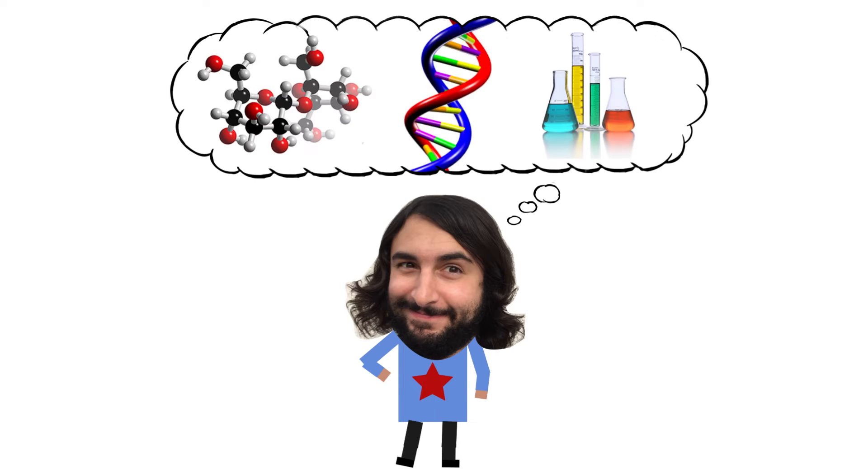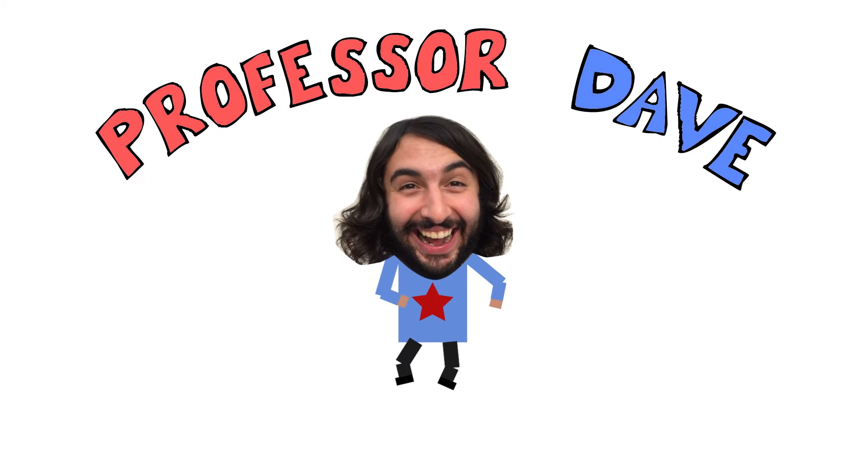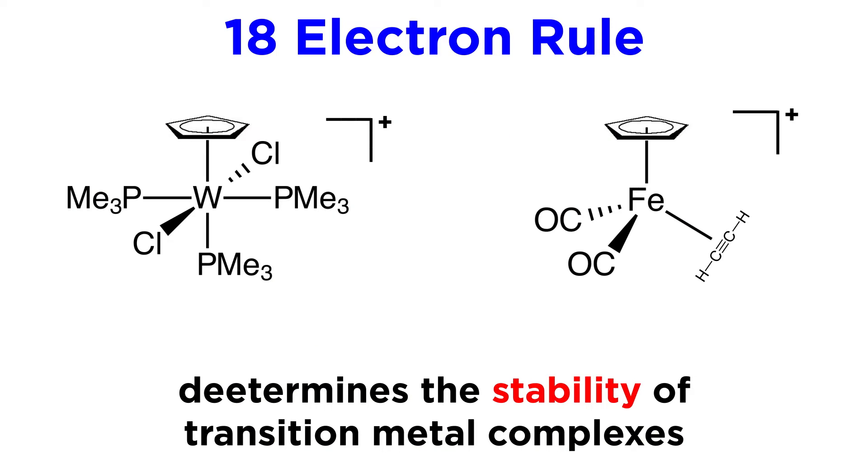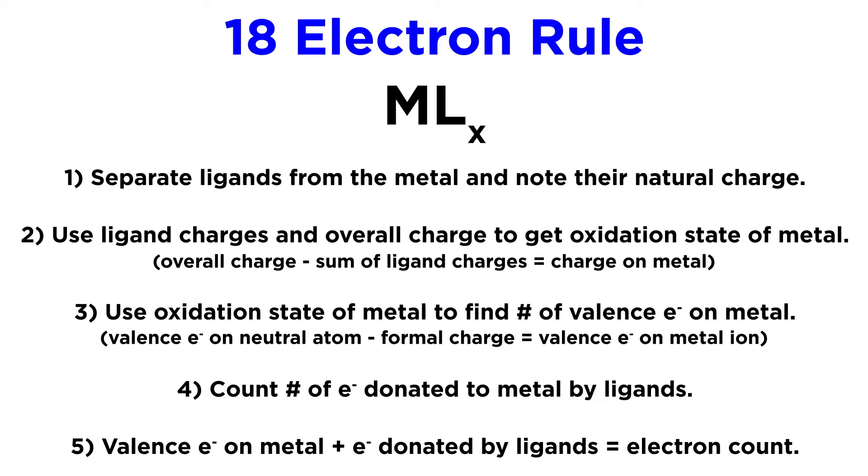Professor Dave Explains. We just learned about the 18 electron rule and how it determines the stability of transition metal complexes, in particular those that are octahedral or tetrahedral. If you have not watched that tutorial yet, please do so now, as in this tutorial an understanding of the general algorithm for applying this rule will be assumed. If you're ready for more practice, let's dive right into some additional examples.